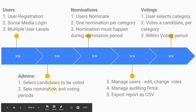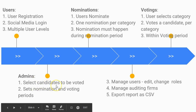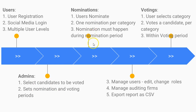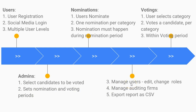The admin selects candidates from all the people nominated — perhaps tens or hundreds of nominees. Our system will automatically present the top three with the highest number of nomination votes, so admin just clicks to select them.